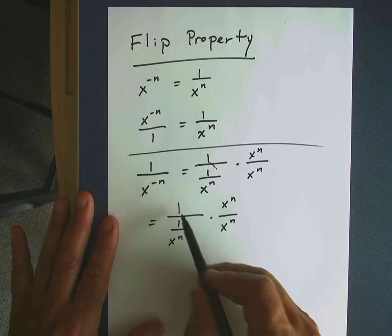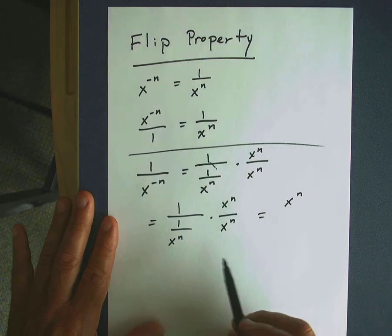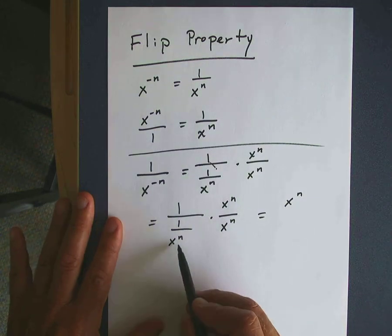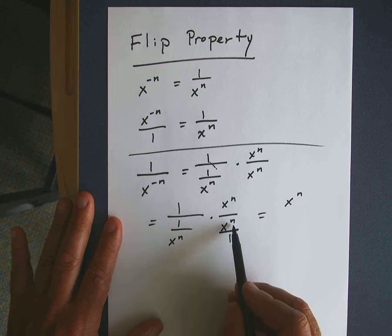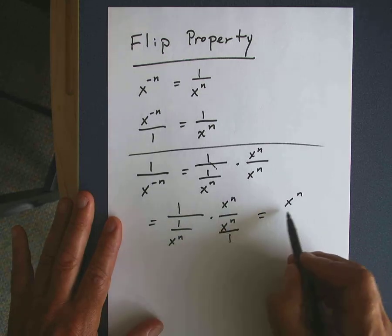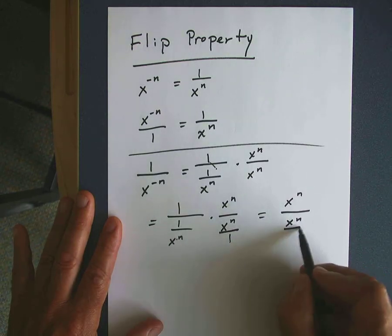If I multiply that in the numerator, 1 times x to the n, I get x to the n power. If you multiply in the denominator, I get 1 over x to the n times x to the n. Remember, this I could rewrite as x to the n over 1. If I multiply these two fractions, I'm going to get x to the n, and then multiply the denominators over x to the n.